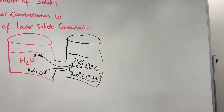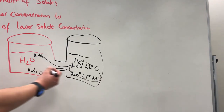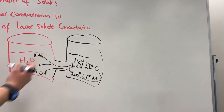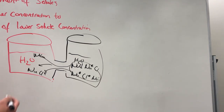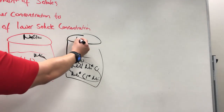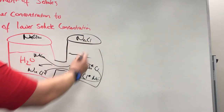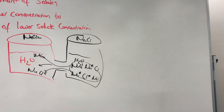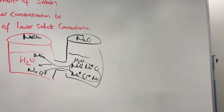High to low solute concentration movement. What happens then is so much sodium comes over that eventually you hit an equilibrium. Equilibrium means that the sodium on this side equals the sodium on this side. When that happens, they might still have movement of sodium from beaker A to beaker B or vice versa, but there's no more net movement of sodium chloride once you hit equilibrium.